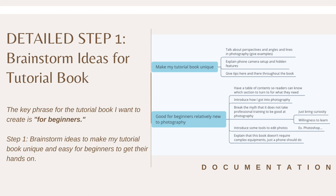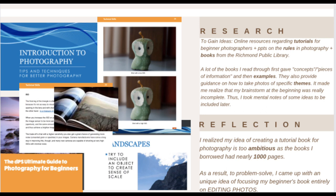Some ideas I thought of include giving tips throughout the book and including photo editing tools like Photoshop. To gain more ideas for my tutorial book, I looked into online resources regarding tutorials for beginners and PowerPoints on the rules of photography, and borrowed books from the Richmond Public Library. A lot of the resources gave concepts and information first, followed by examples, and also provided guidance on how to take photos of specific themes. It made me realize that my brainstorm at the beginning was really incomplete, so I took mental notes of some ideas to be included later on.